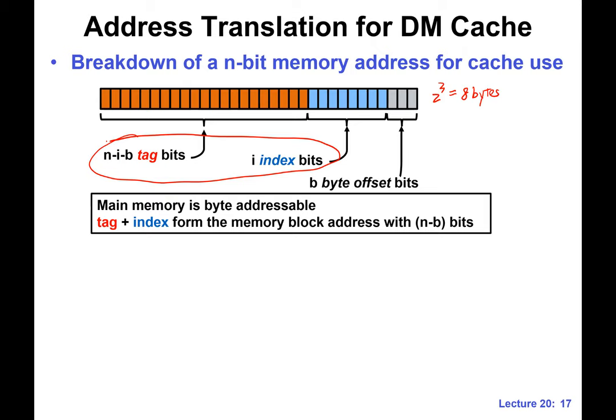With that said, can you tell me how large the cache is? How many blocks do we have in the cache? We are using index bits to address the cache. In this case, we have eight index bits, so two to the eight, which is 256 cache blocks for this specific example.